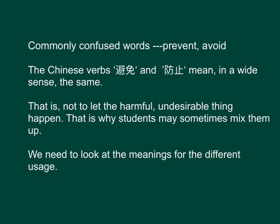Commonly confused words: prevent and avoid. The Chinese verbs 避免 and 防止 mean, in a wide sense, the same thing — that is, not to let a harmful or undesirable thing happen. That is why students may sometimes mix them up. We need to look at the meanings for their different usage.